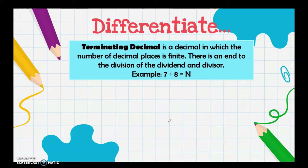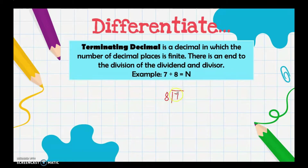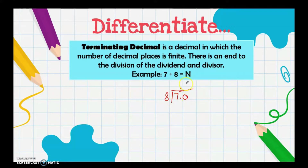There is an end to the division of the dividend and divisor. For example, seven divided by eight. Since we cannot divide seven by eight directly, we put a decimal point and add zero, then divide 70 by 8, which gives us 8 with 64.